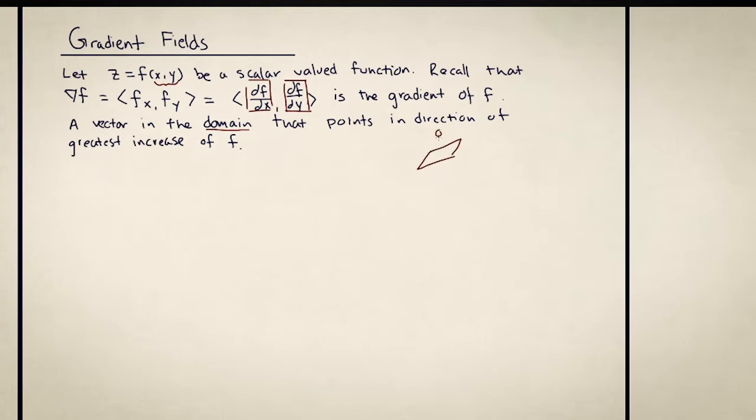So if I'm thinking of this function as a surface, then the gradient will be the xy direction that I need to walk in to go up the hill as much as possible. This is the direction that he should walk in to go up the hill. If the hill was steeper, then the gradient would be longer.